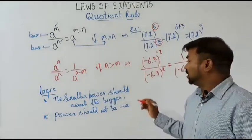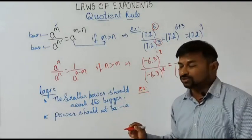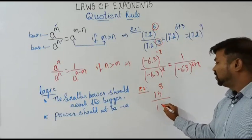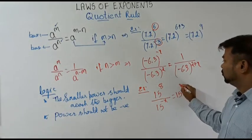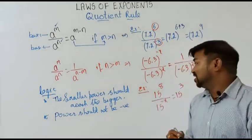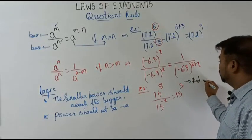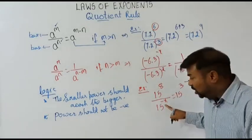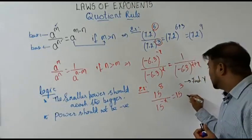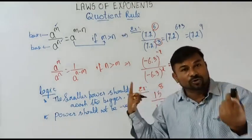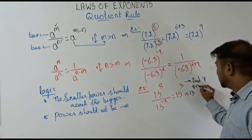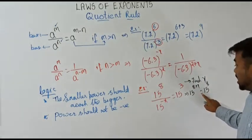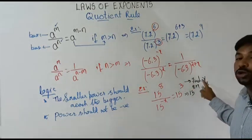Before getting back to the practice worksheet, let me go for one more question. Suppose the question is: 15 to the power 8, divided by 15 to the power minus x, equals 15 to the power 3 — and you are asked to find x. It's simple: the negative one should go up. So it becomes 15 to the power 8 plus x equals 15 to the power 3. Whenever bases are equal and there's an equal sign, the powers must also be equal.